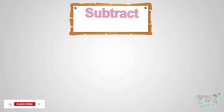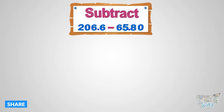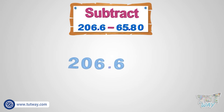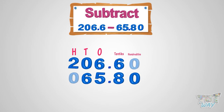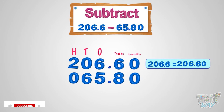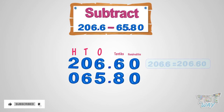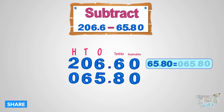Now let's learn how to subtract decimal numbers. We have to subtract 65.80 from 206.60. First of all, write the numbers in such a way that the decimal points are aligned, with the bigger number always above the smaller number. You can append zeros too — you can write 206.6 as 206.60, and 65.80 as 065.80.